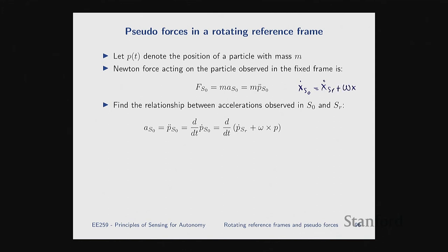Acceleration in the fixed frame is just the second derivative of position in the fixed frame, which is d/dt of velocity. We want to convert everything to the rotating frame. First, we convert p-dot using what we just derived: the time derivative in the fixed frame equals p-dot in the rotating frame plus omega cross P. Now we take the derivative of this expression again. We'll apply our mathematical framework multiple times — the general rule being: for any vector x, x-dot in the fixed frame equals x-dot in the rotating frame plus omega cross x.